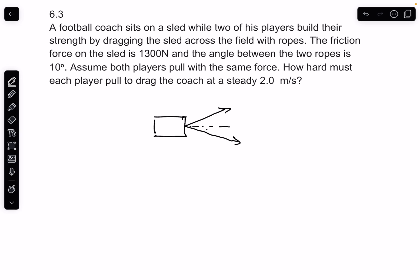That means this angle right here is theta, and theta is 10 degrees. The friction on the sled is 1300 newtons. So if you call this T1 and this T2, the key is T1 equals T2.